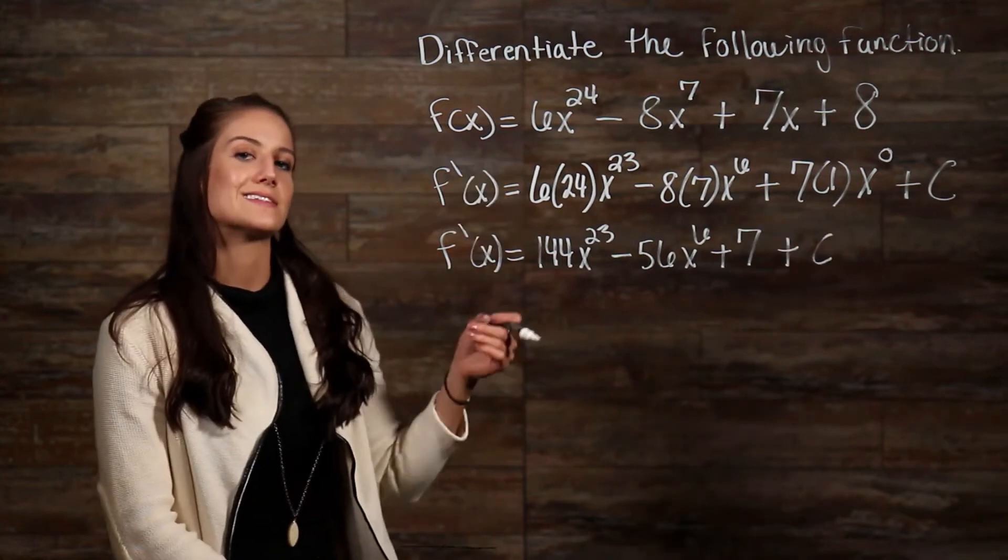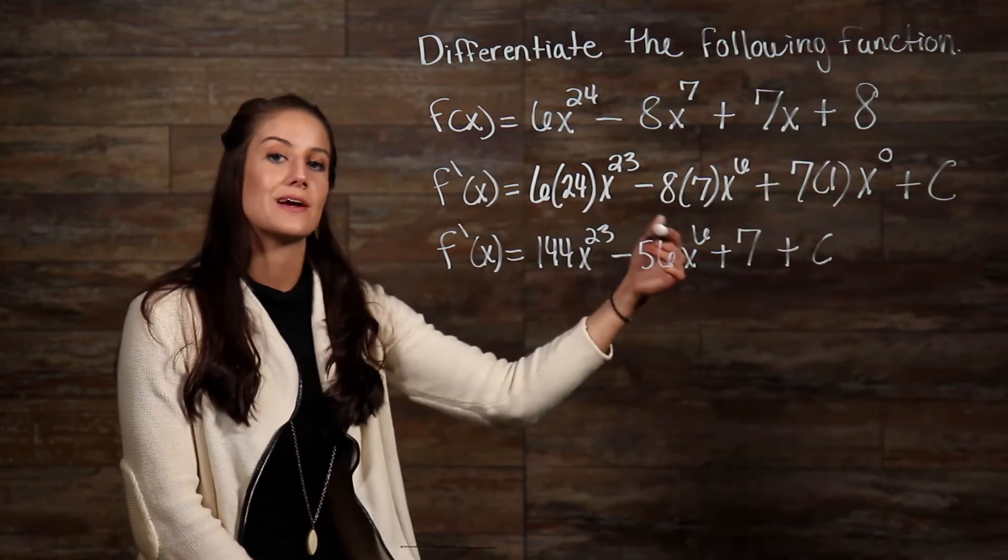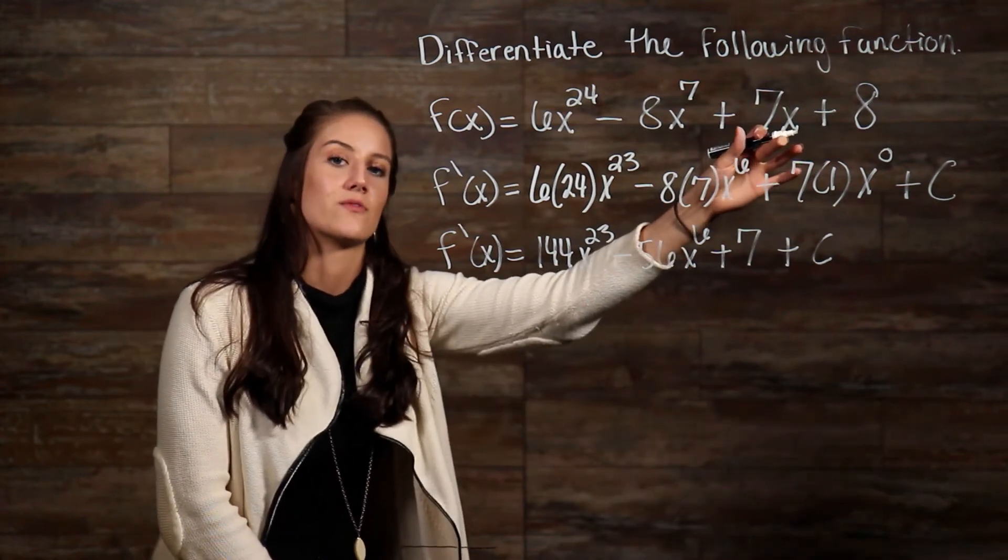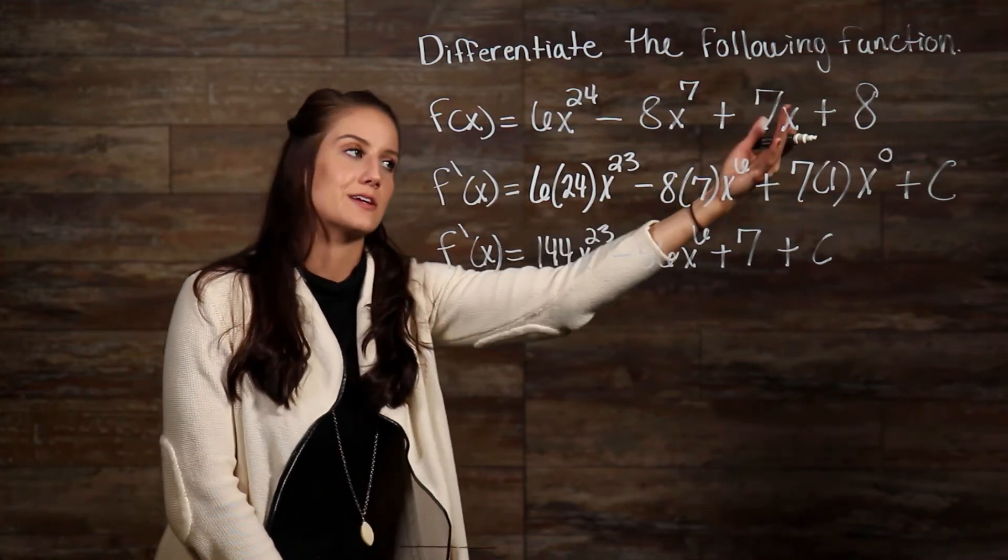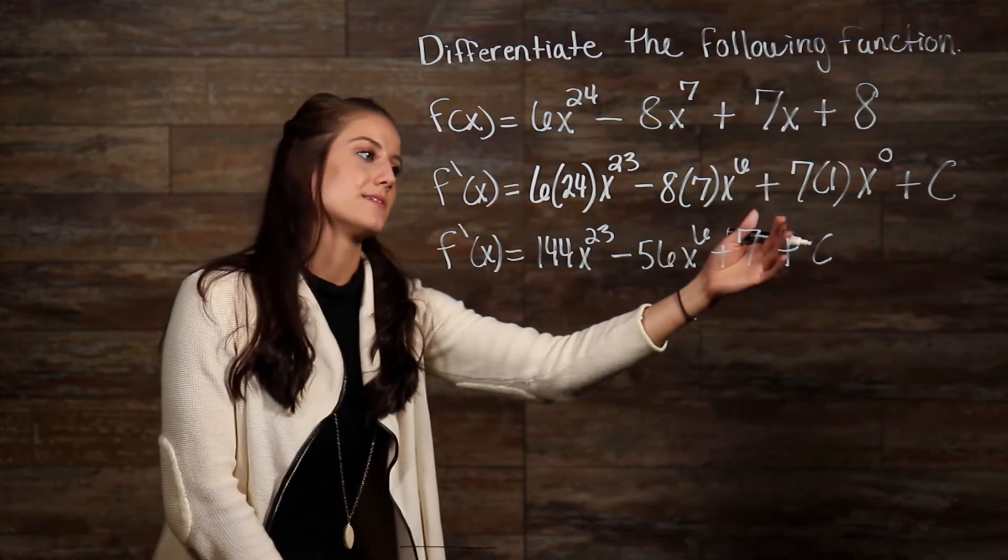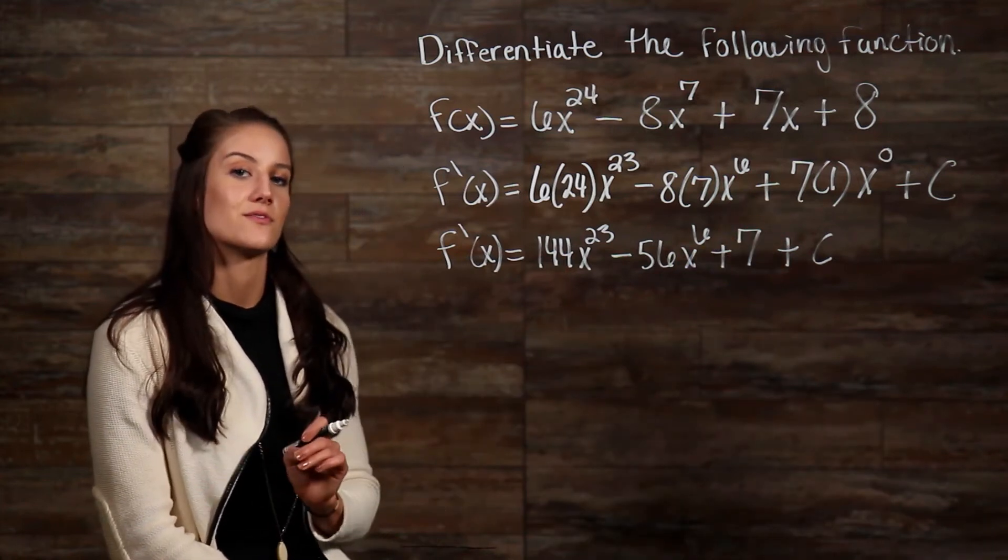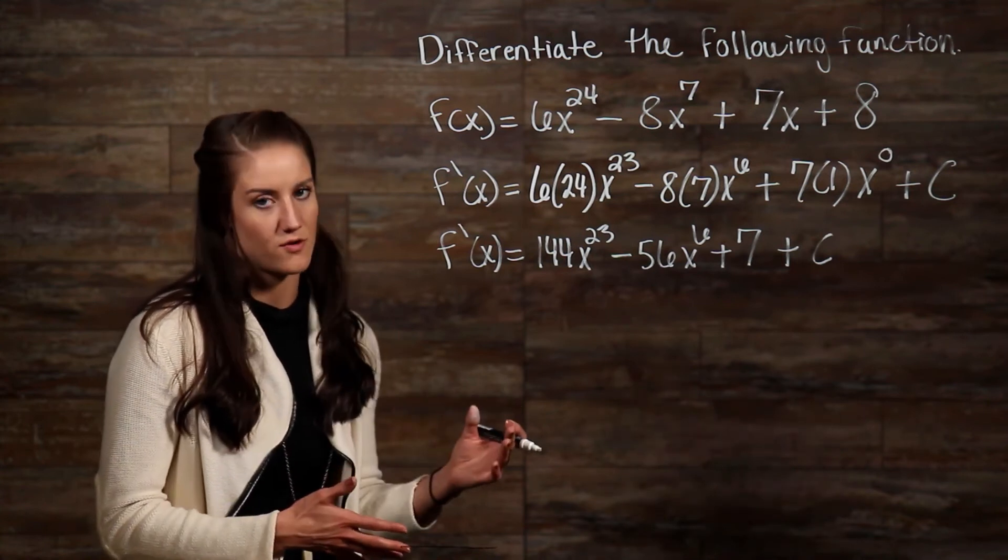The reason I wrote out 7 times 1 times x to the zero is to show you why 7x becomes 7. We know that 7x has an exponent of 1, so when we bring that 1 down and multiply it times 7 and subtract 1, we're left with 0. And x to the zero is 1, so that's why we're left with 7. This is true of any variable with an exponent of 1. You can just drop the variable and the derivative is just the remaining coefficient.